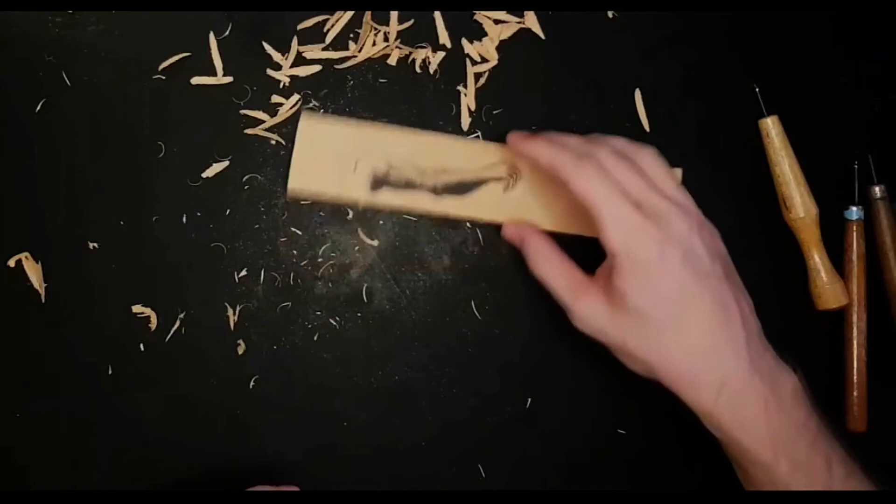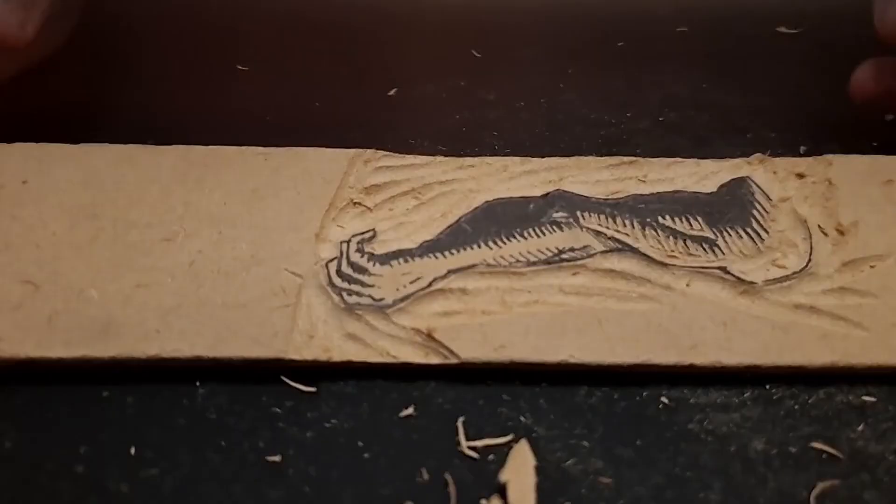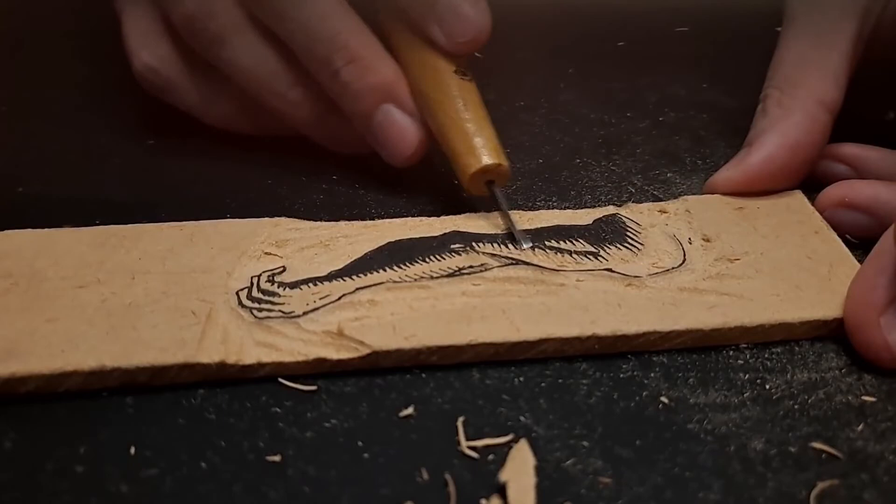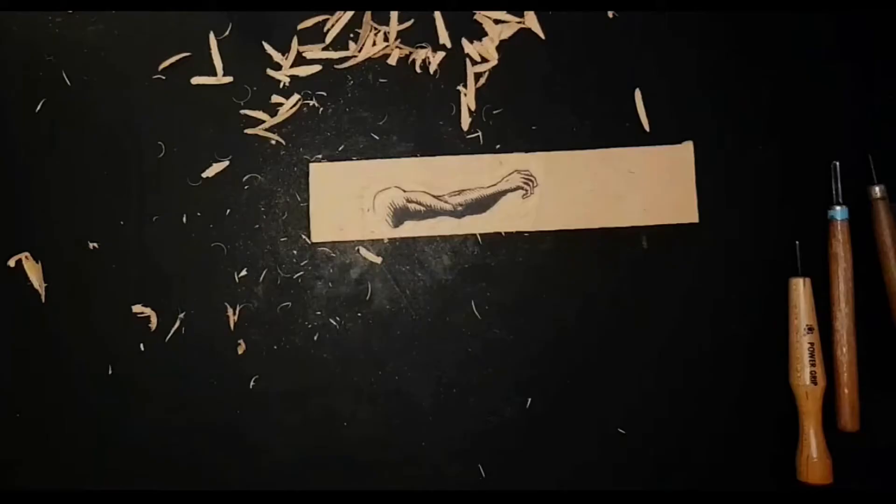So those are three easy techniques, three and a half I guess. Three and a half easy, semi-easy techniques for rendering a cylindrical form, making these kinds of marks in a woodcut.